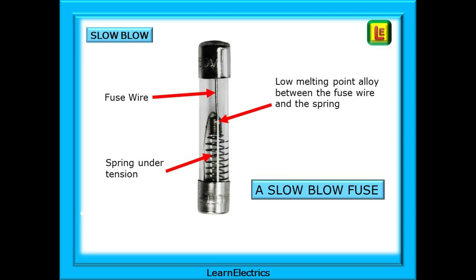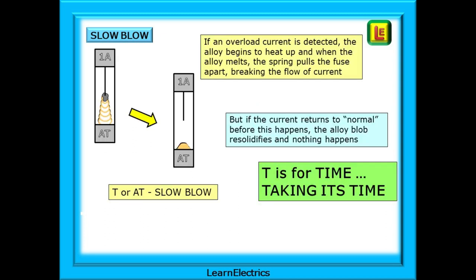Now the opposite type — the slow blow fuse. These are designed to allow small temporary surges or overloads to have no effect on them. The fused wire does not reach all the way through the glass tube; it stops about halfway where it is joined to a spring by a blob of alloy — solder if you like — that keeps the two halves connected. If an overload current is detected, the alloy begins to heat up, and when the alloy melts, the spring pulls the fuse apart breaking the flow of current. But if the current returns to normal before this happens, the alloy blob re-solidifies and nothing happens. Slow blow fuses will have the letters AT or T on the casing. As a memory jogger, think of the letter T as indicating time — T for taking its time.